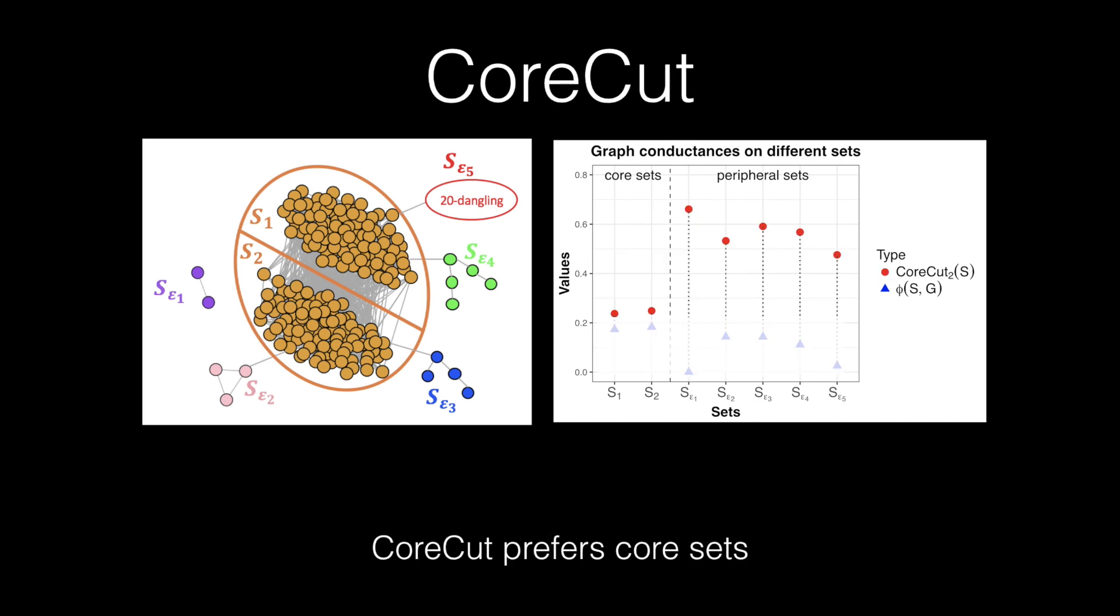The regularization increases the graph conductance of the periphery sets more significantly and doesn't affect the core sets that much. With regularization, the core cut tends to find the core sets instead of the periphery sets.